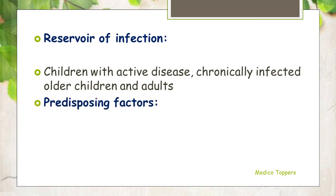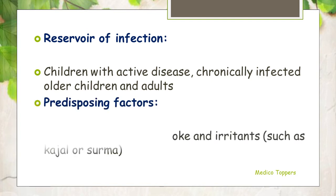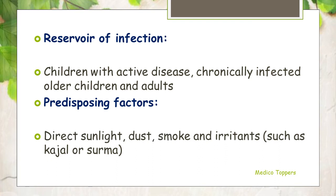The predisposing factors causing the disease are direct sunlight, dust, smoke, and irritants such as kajal or surma. These are all the predisposing factors in case of trachoma.